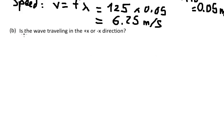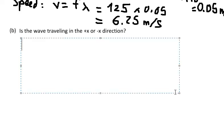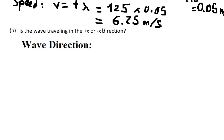Question B asks: is the wave traveling in the positive S or negative S direction? We look at the wave formula. The relevant part is k·S plus omega multiplied by T equals zero, which tells us the wave direction.